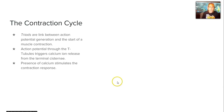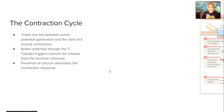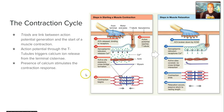If everything happens correctly, then we have the contraction cycle. The triads are a link between the action potential and the start of a contraction, because the action potential goes through the T-tubules and triggers calcium ion release from the terminal cisternae. The calcium stimulates that contraction response, as you can see in the diagram. ACH releases from the electrical impulse, the action potential reaches the T-tubule sarcoplasmic reticulum, calcium is released to expose the active sites of actin, and then forms a crossbridge with the myosin head, resulting in a contraction of the muscle fiber.